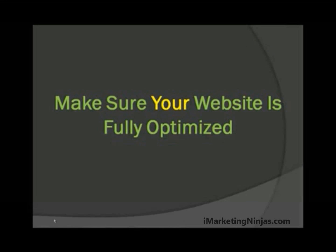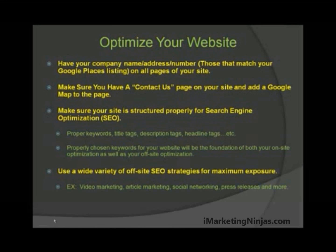Make sure your website is fully optimized. Optimize your website by having your company name, address, and phone number — matching your Google Places listings — on all pages of your site. Make sure you have a contact us page and add a Google map to that page. Ensure your site is structured properly for search engine optimization: proper keywords, title tags, description tags, headline tags, and more. Properly chosen keywords will be the foundation of both your on-site and off-site optimization. Use a wide variety of off-site SEO strategies for maximum exposure, such as video marketing, article marketing, social networking, and press releases.